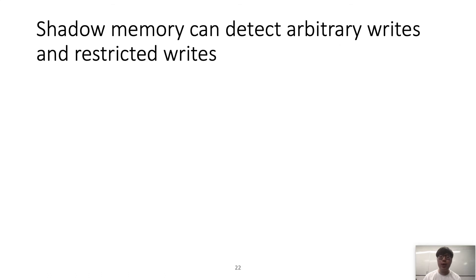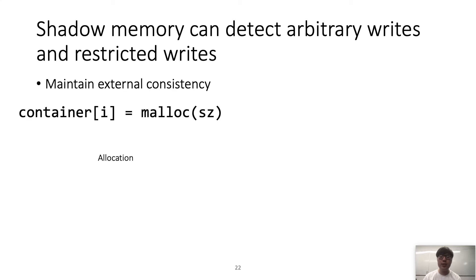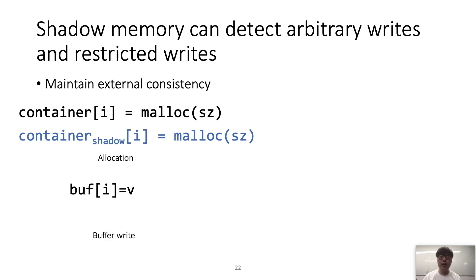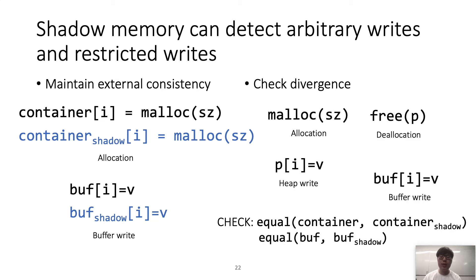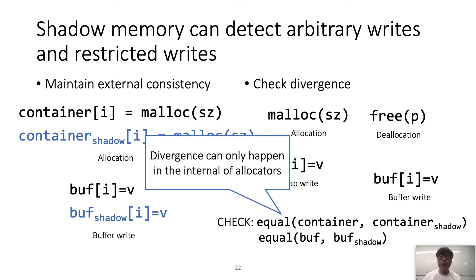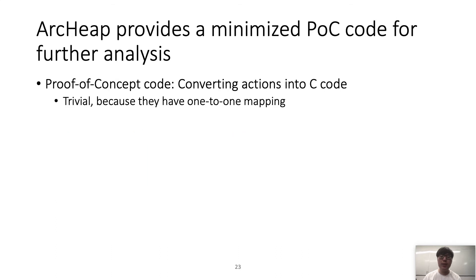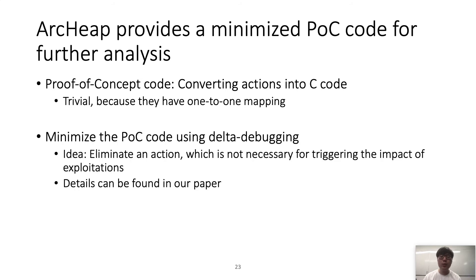The first invariant is easy to check using allocation information. For the second, Rkip uses shadow memory to detect arbitrary and restricted writes efficiently. In every action that can change internal data structures, we update the shadow memory — for example, in an allocated chunk we update the container, and in a buffer write we update the global buffer. Then in every action such as allocation, deallocation, heap write, and buffer write, we check whether the shadow memory's contents diverge. This divergence means the heap allocator internally modified memory in the container or global buffer, which can be converted into an arbitrary or restricted write. For further analysis, Rkip provides minimized POC code written in C, with a one-to-one mapping to actions. Rkip also minimizes the POC using delta debugging, eliminating actions not required to trigger the impact.